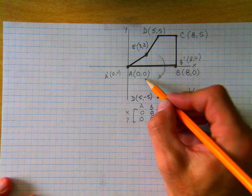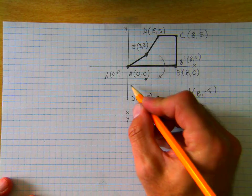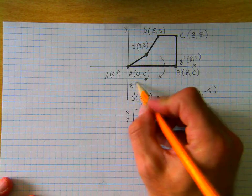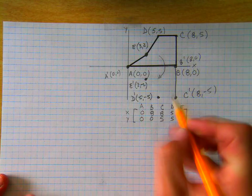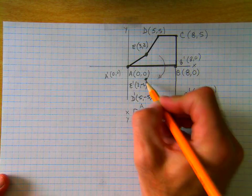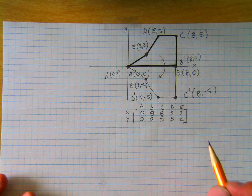And then this point, 3, 2, point E, becomes E prime, 3, negative 2. And then we can connect these lines. And we have the reflection of our figure over the X-axis.